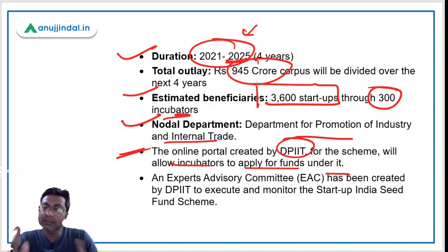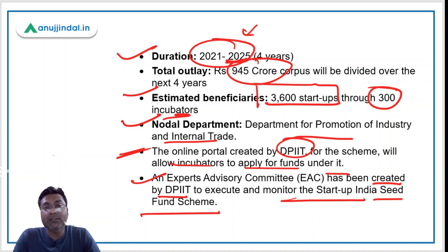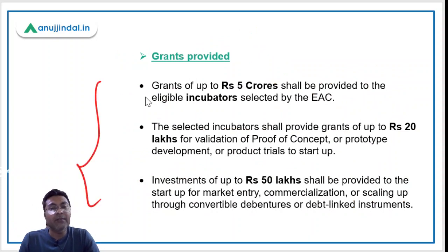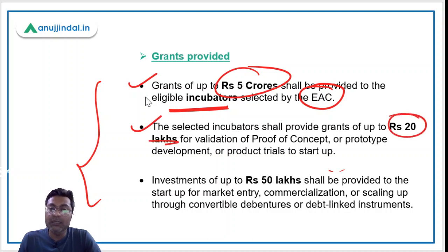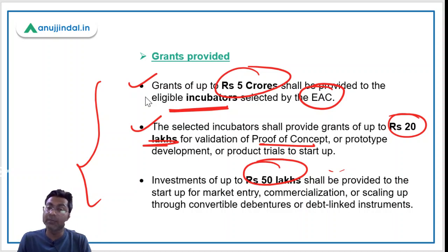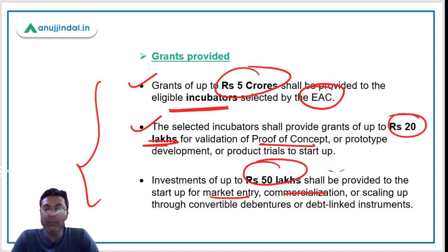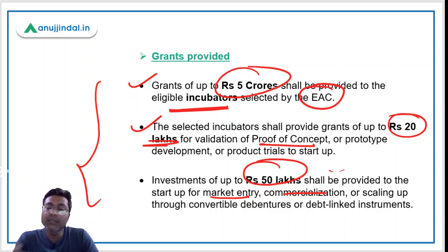Importantly, startups cannot apply for funds directly — only incubators can. An Experts Advisory Committee created by DPIIT will execute and monitor the scheme and take final decisions on fund release. Grants of up to 5 crore rupees will be provided to eligible incubators selected by the committee. These incubators will then provide grants of up to 20 lakhs to startups for proof of concept or prototype development and product trials, and up to 50 lakhs for market entry and commercialization.